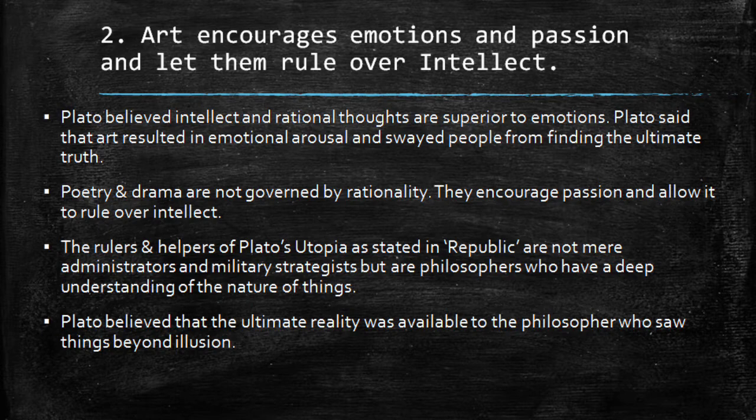The rulers and helpers of Plato's utopia, as stated in Republic, are not mere administrators and military strategists but are philosophers who have a deep understanding of the nature of things. In his ideal state mentioned in Republic, the administrators and military strategists are not poets, dramatists, or playwrights — they are philosophers who are more close to reality. Plato believed that the ultimate reality was available to philosophers who saw things beyond illusion.